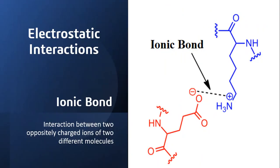The first electrostatic interaction is ionic interaction between two oppositely charged ions of two different molecules. On the right side, two molecules are shown which exhibit ionic or electrostatic interactions.